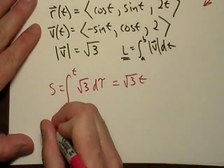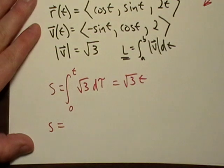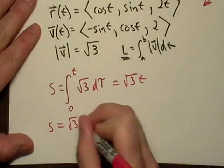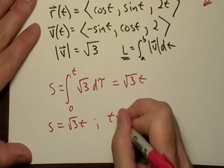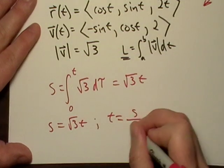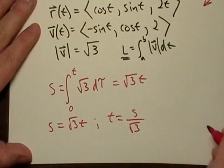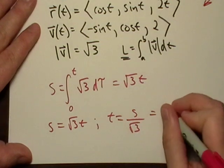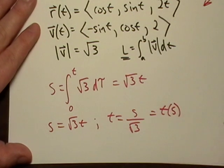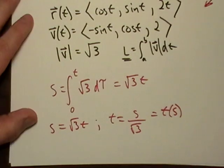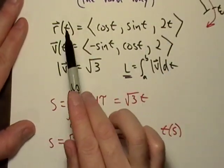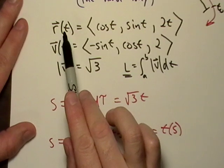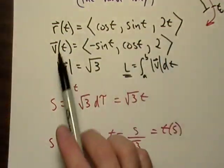So let's go ahead and write that. So S is equal to square root of three T, so T is equal to S over square root of three, and this is all equal to T of S. Now, remember, here's our original position vector, and it is parameterized by time itself, maybe, or something else.